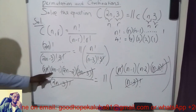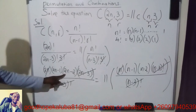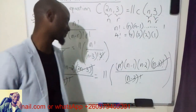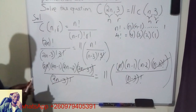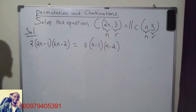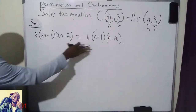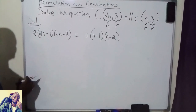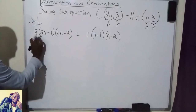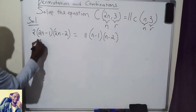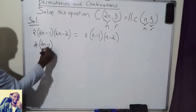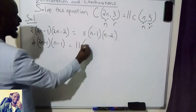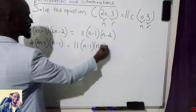So I have 2n multiplied by (2n minus 1) multiplied by (2n minus 2) equal to 11 times n multiplied by (n minus 1) multiplied by (n minus 2). Simplifying that statement, 2 is common in (2n minus 2), so I can factor it out — it will multiply with the existing 2, ending up as 4. Then I'll have (2n minus 1) and (n minus 1). This is equal to 11 times (n minus 1) times (n minus 2).